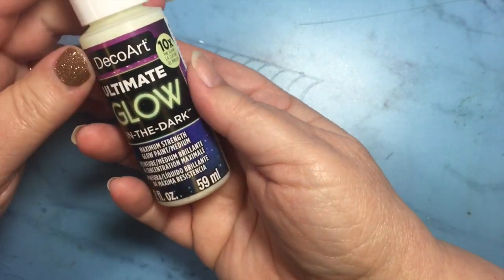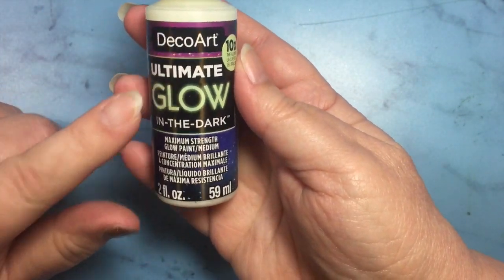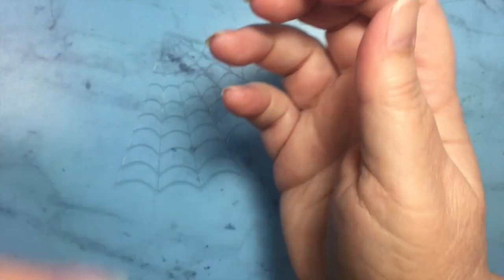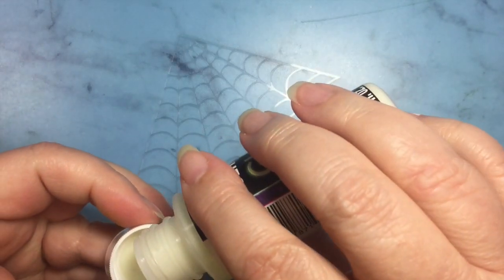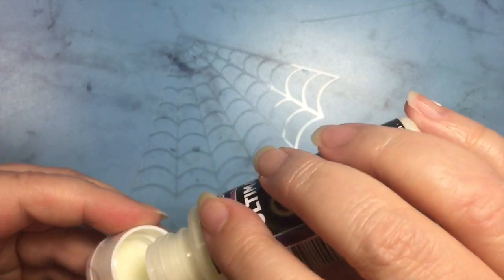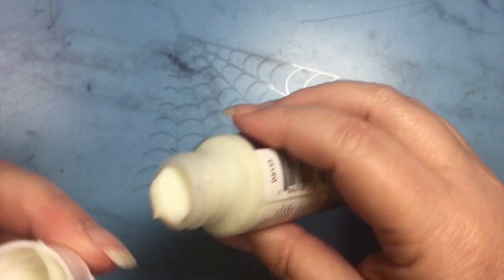And what I'm going to do is I'm going to paint it with this DecoArt glow in the dark, so I'm just going to give this a shake and I'm just going to work right out of the cap, just drop a little bit in there.